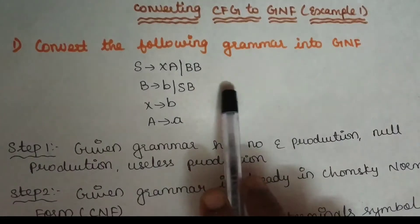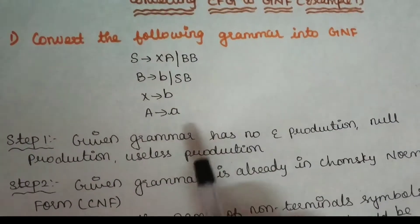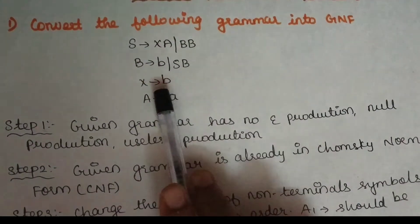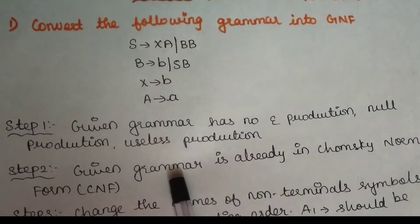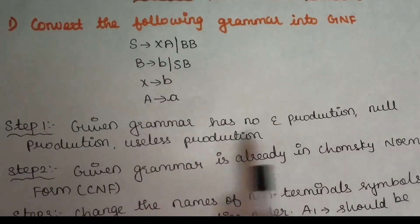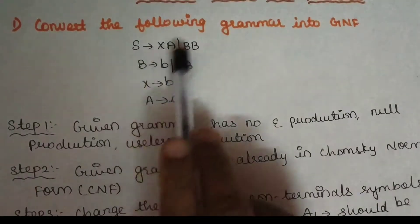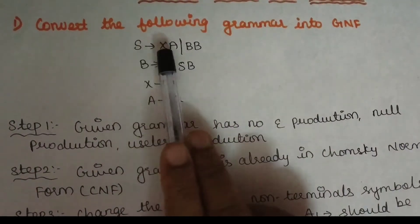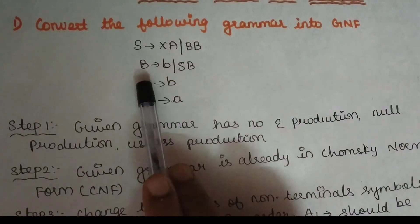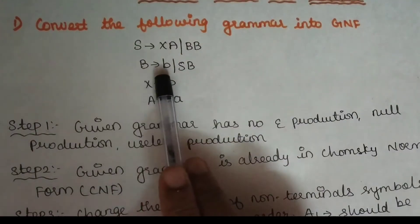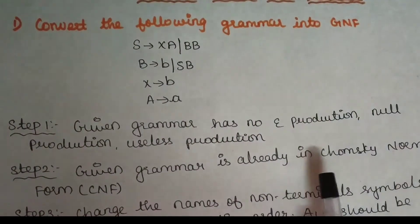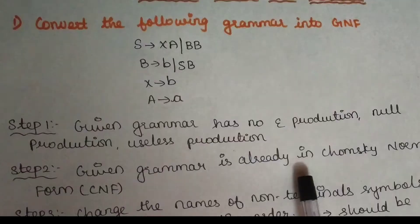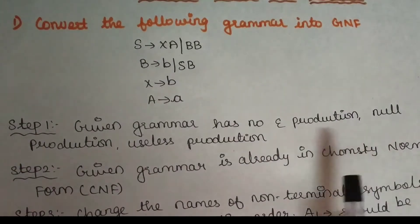That's why the first step is to clear those. The second step is to convert the grammar to Chomsky Normal Form. You can see all the productions have non-terminal, non-terminal — that is Chomsky Normal Form. So the second step is no problem.